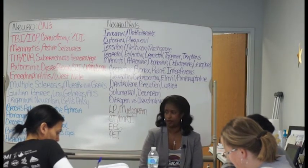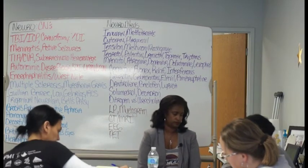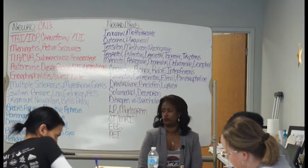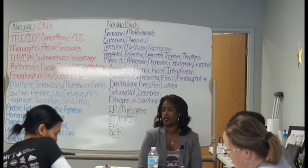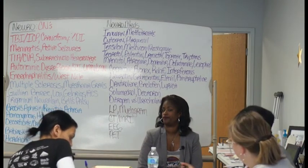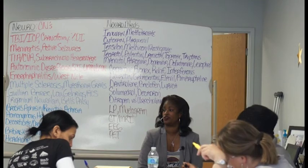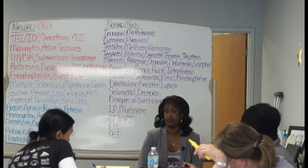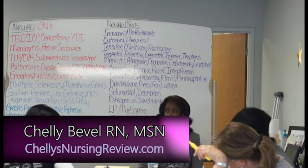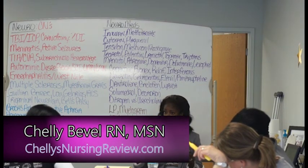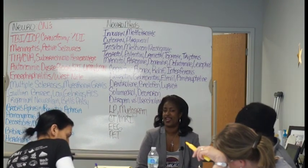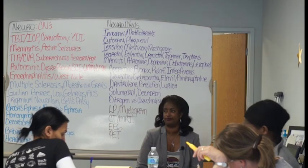Fixed and dilated pupils — make sure you write this down. Fixed and dilated means dead as a doornail. Fixed means dead people don't respond to your penlight. Dilated means there is nothing — what dilates your eyes? Darkness. And there is nothing darker than death. Fixed and dilated equals dead.